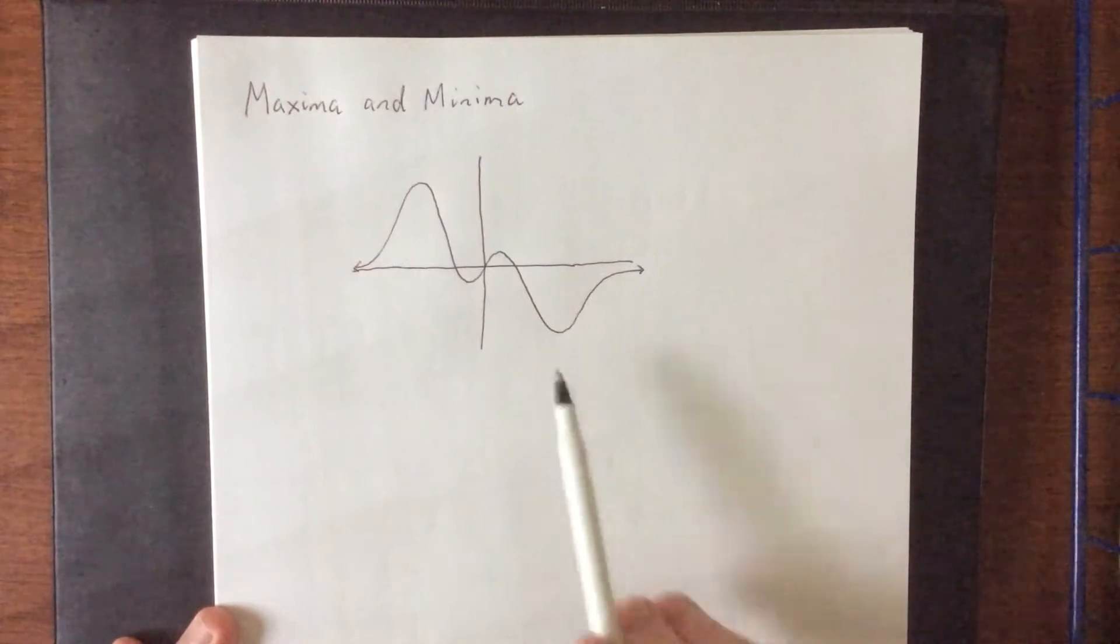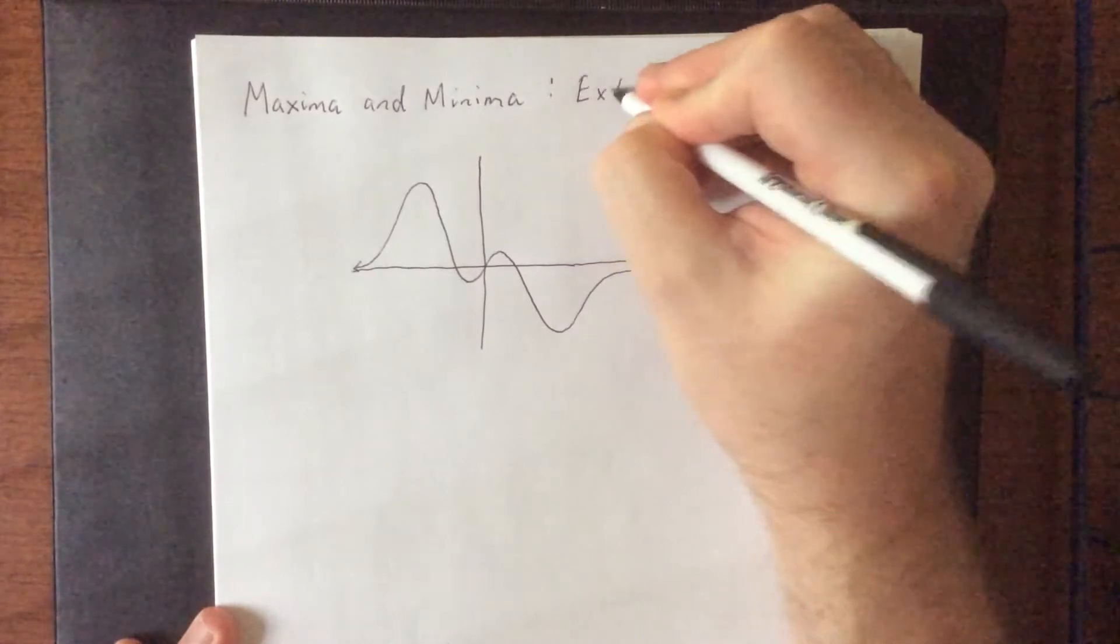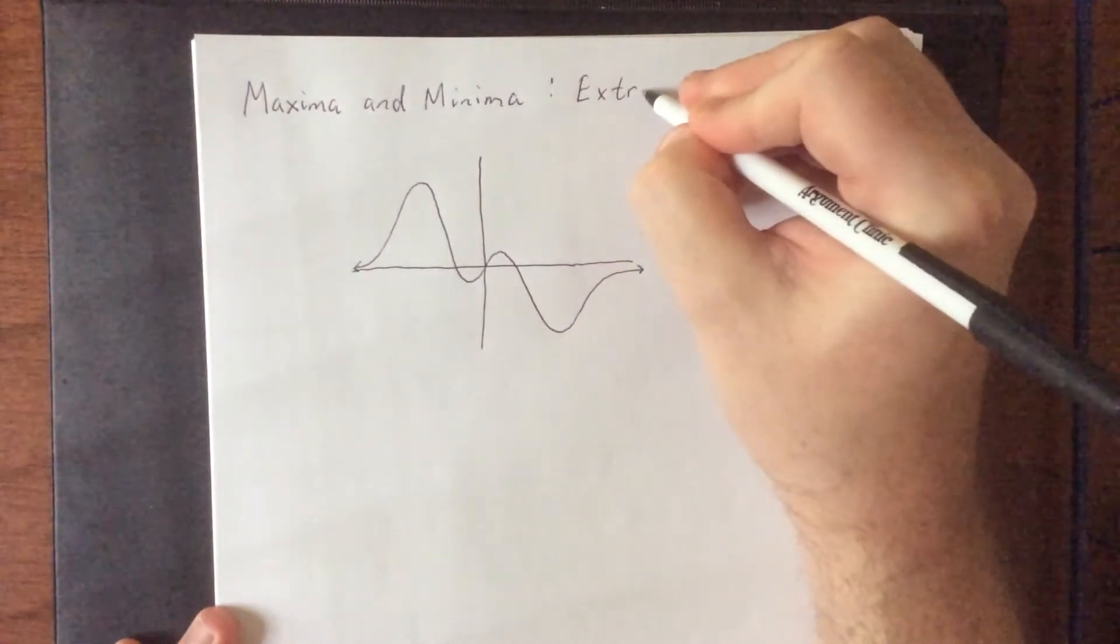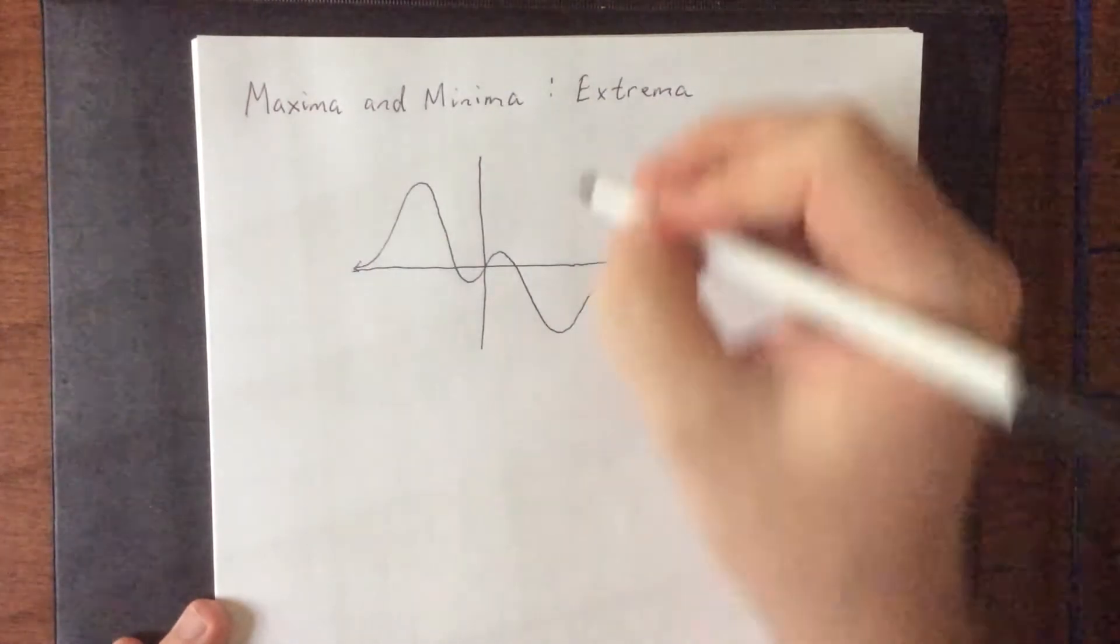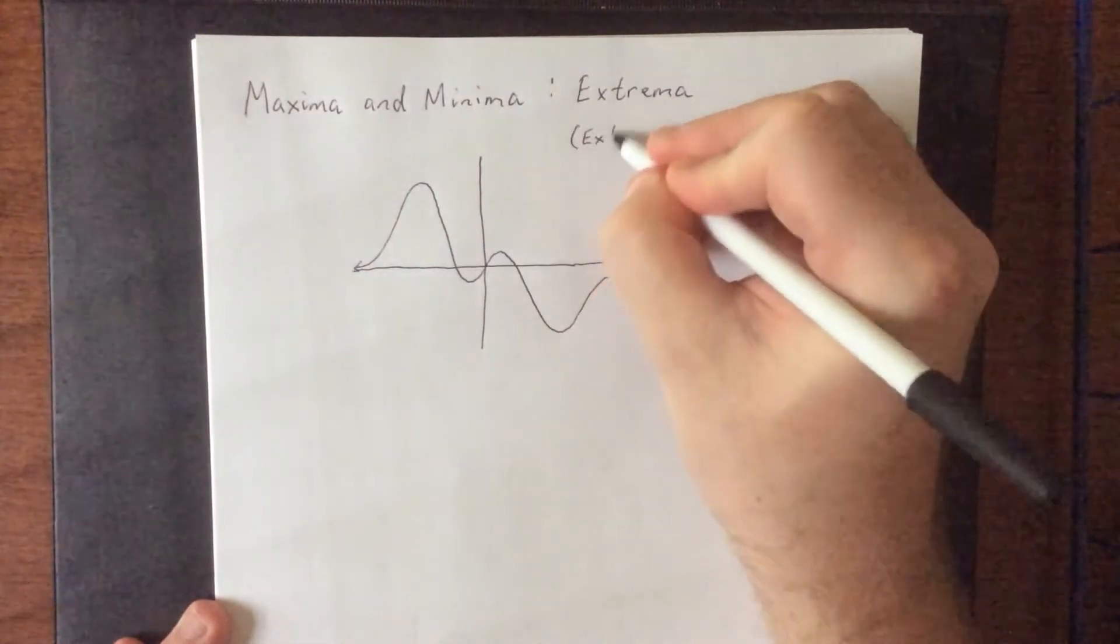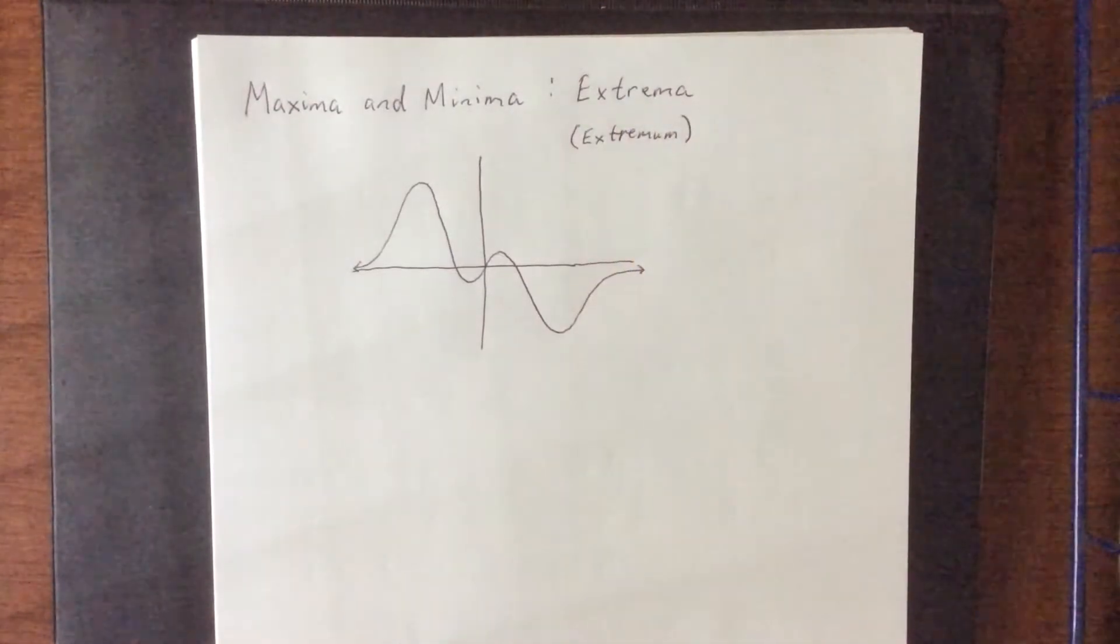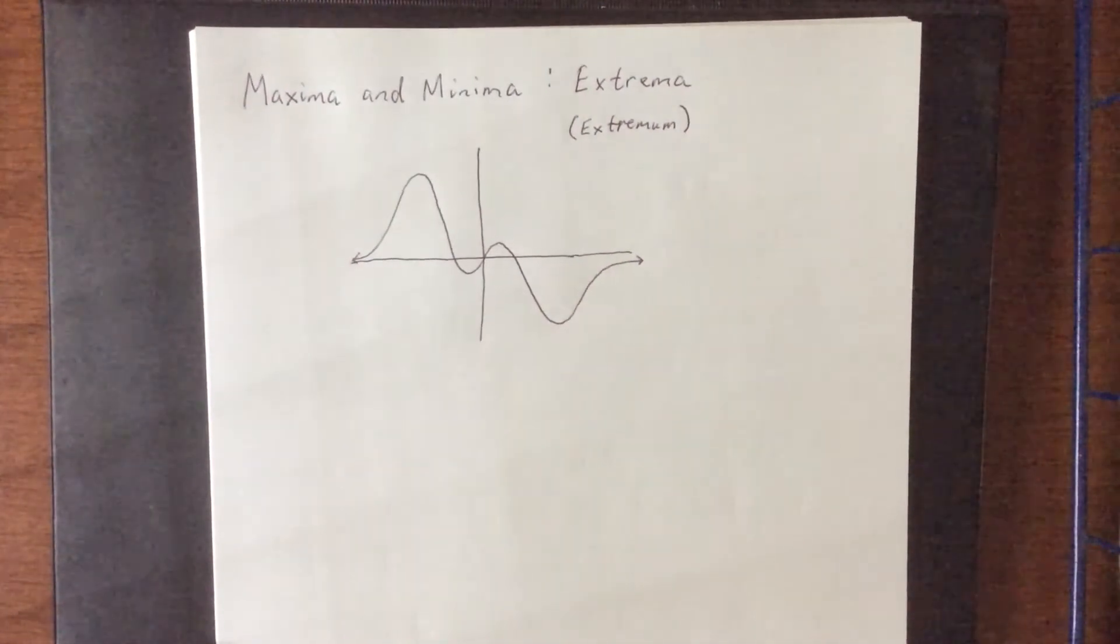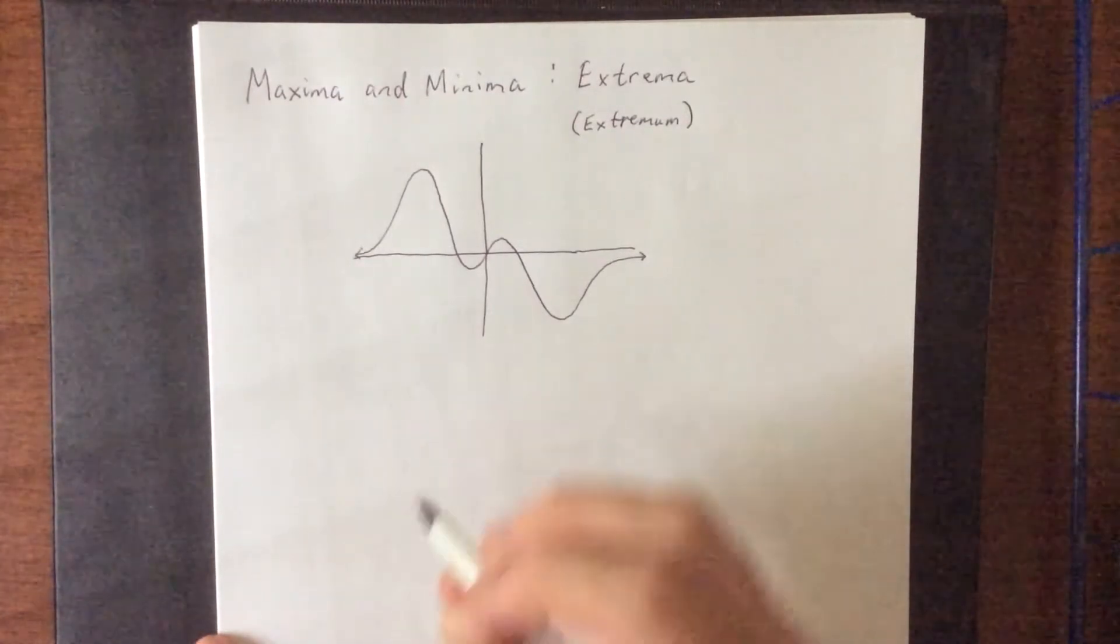So I have sketched a graph here with a couple of different extreme points. Put together maxima and minima are referred to as extrema, which is the plural of extremum. Now some of these should be familiar from concepts from back in pre-calculus, but let's go over them.